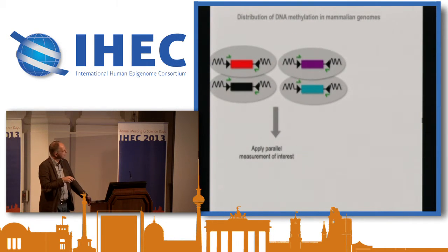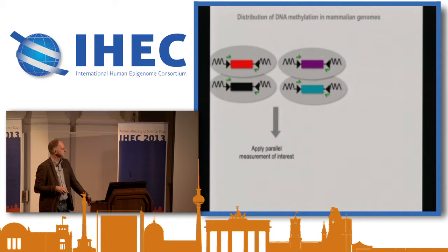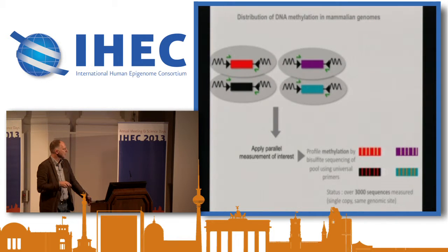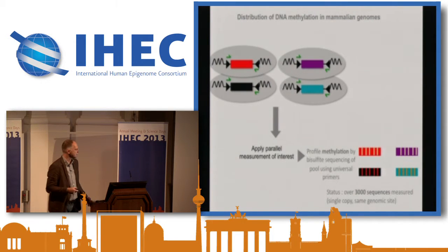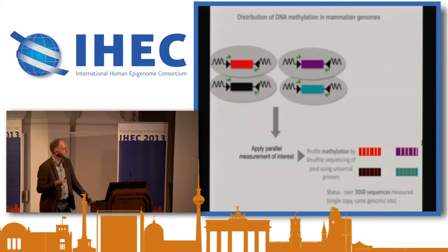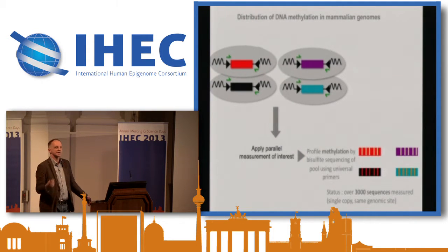We can do this now for pools of sequences and look in one go into a thousand unique sequences and ask: what is the methylation state? We can ask the cell a thousand times how it would methylate those sequences, and then ask what are the patterns and what makes these patterns. We measure methylation by bisulfite sequencing in this pool, doing a PCR with a universal primer that flanks these inserts. It's all single copy, same genomic site. Our current status is over 3,000 different sequences being measured — a large variety of defined variation at the same genomic site.